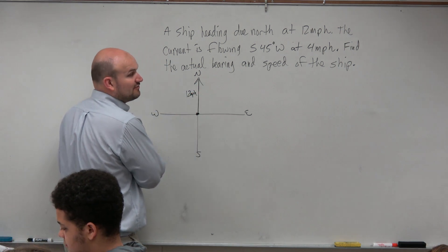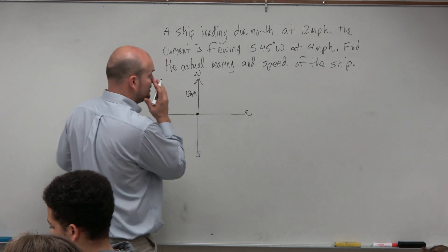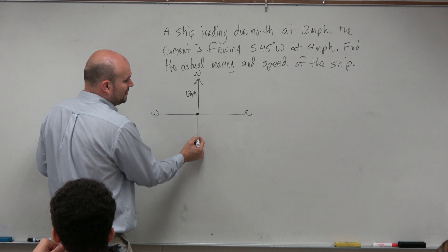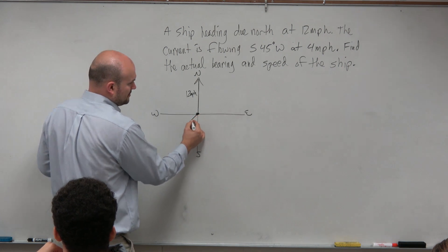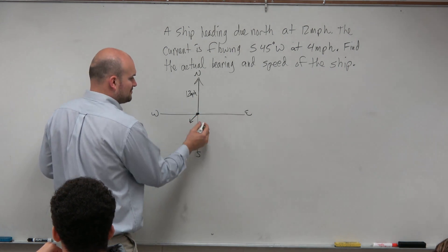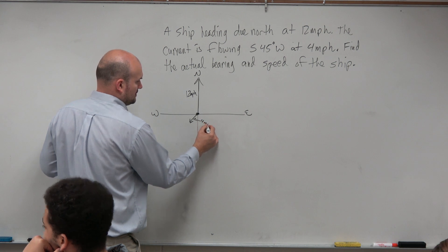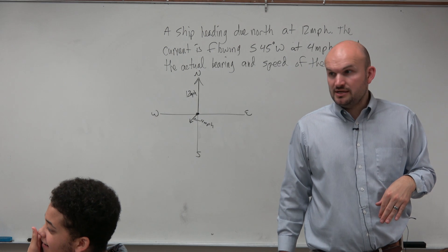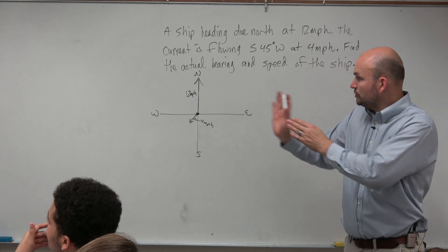The next one is you have a current. Now think about that. The current is flowing southwest, 45 degrees southwest, so south 45 degrees west, at 4 miles per hour, right? Now, that's slowing down your ship. Wouldn't you guys agree? And it's also kind of pushing you west.